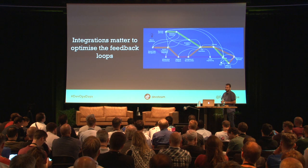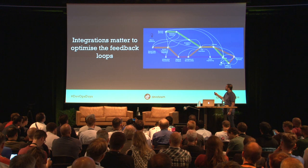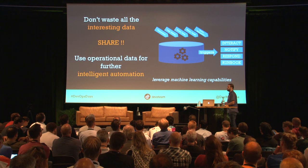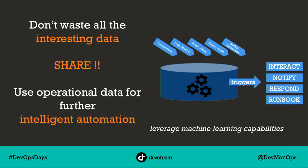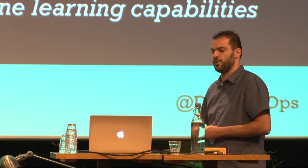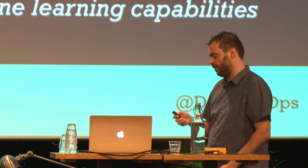It's all about mapping all these integrations that you need in your tool chain. And when all these integrations are there, you are generating a lot of data. Don't waste this data — it's really interesting. We use all this data and share it using Confluence tools, Jira tools, but also using monitoring tools to respond, Slack tools and setups to interact, notify, and respond.